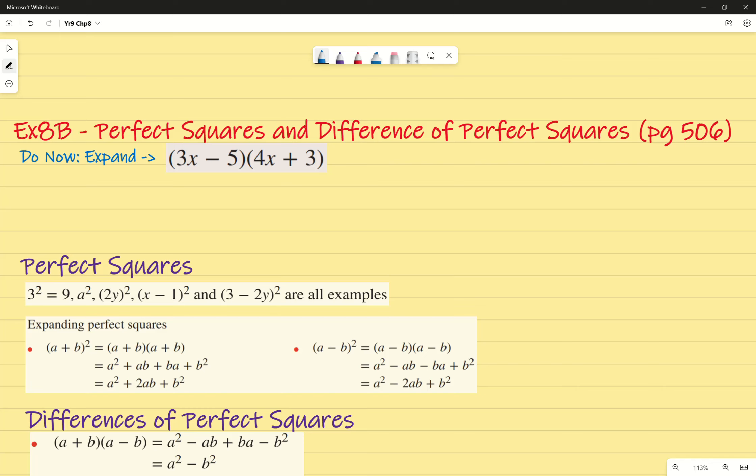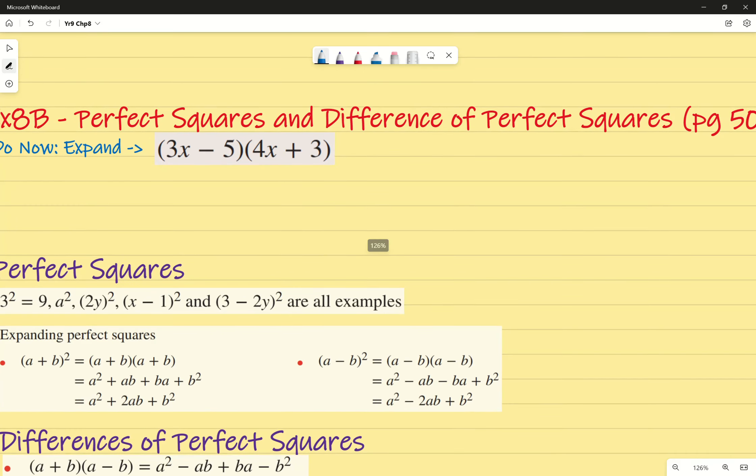Introduction to exercise 8B on perfect squares and difference of perfect squares on page 506. For the question, we have (3x - 5) multiplied by (4x + 3), again applying FOIL. First is the F, so that's 3x multiplied by 4x. What does that give me?